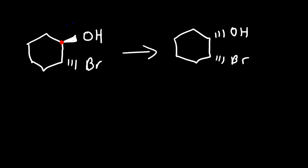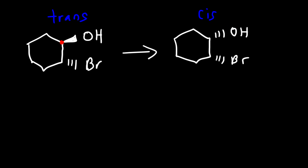Now notice that this is basically the trans isomer, because this one is in the front and that's in the back. And this appears to be a cis isomer because both of these groups are in the back. Cis and trans geometric isomers are a type of diastereomer, which is the subcategory of stereoisomers. All of the molecules are connected to the same thing, but the way that they're arranged in space is different, and so these are diastereomers.